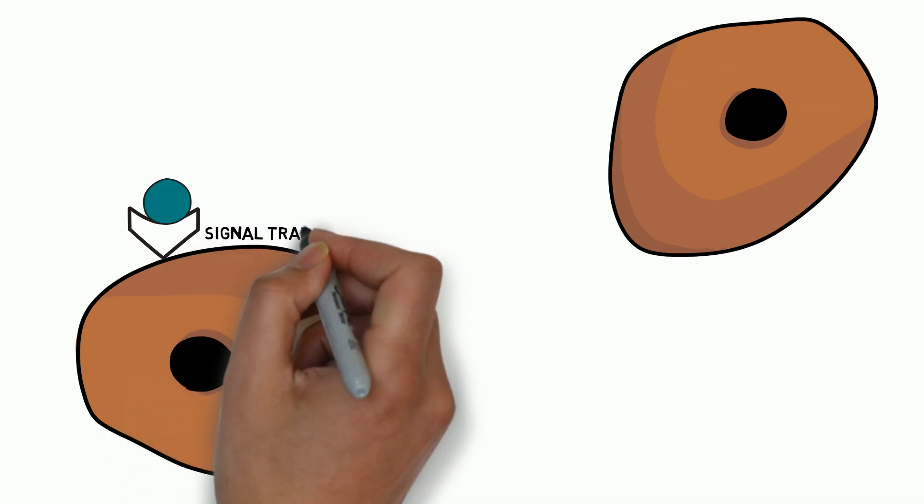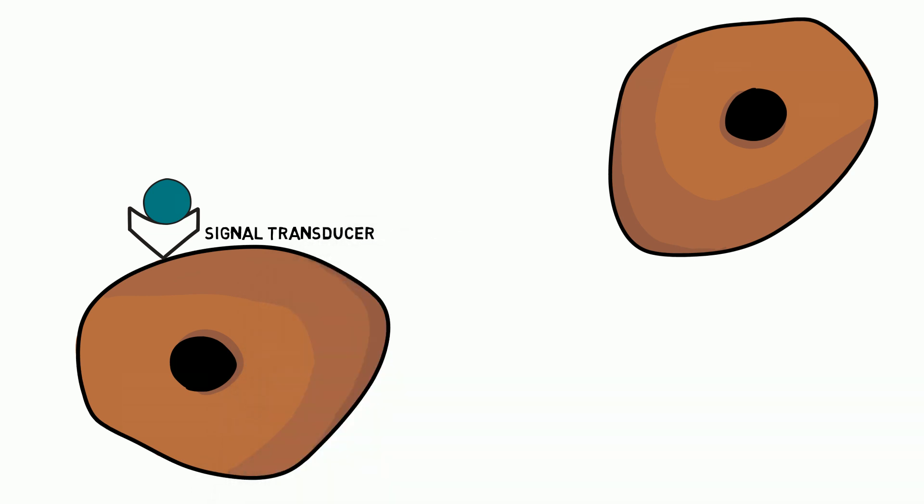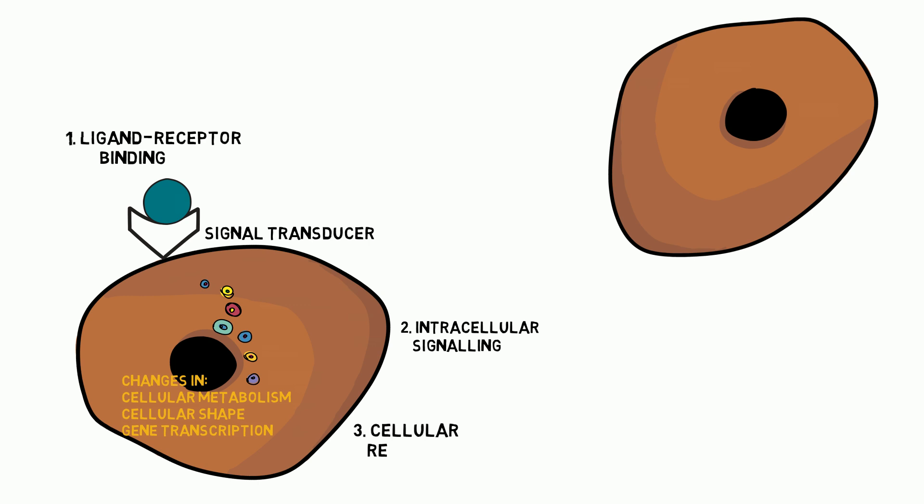These cell surface receptor proteins act as signal transducers. They convert an extracellular ligand receptor binding event into intracellular signals that alter the behavior of the target cell. Hence, the cell signaling pathway is also known as signal transduction pathway.